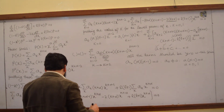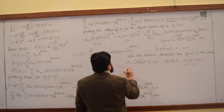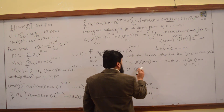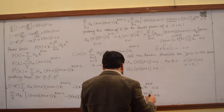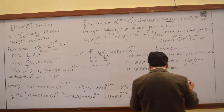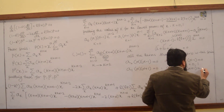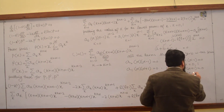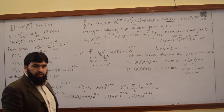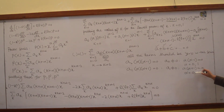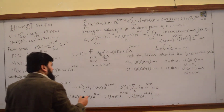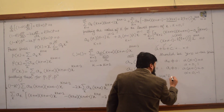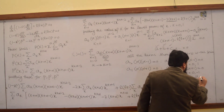Similarly, the second term gives a_1 times (alpha plus alpha) times (alpha plus 1) equal to zero. If a_1 is non-zero, then alpha times (alpha plus 1) equals zero, which means alpha equal to 0 and alpha equal to minus 1. Alpha equal to zero appears in both, but alpha equal to 1 and alpha equal to minus 1 are two separate values.